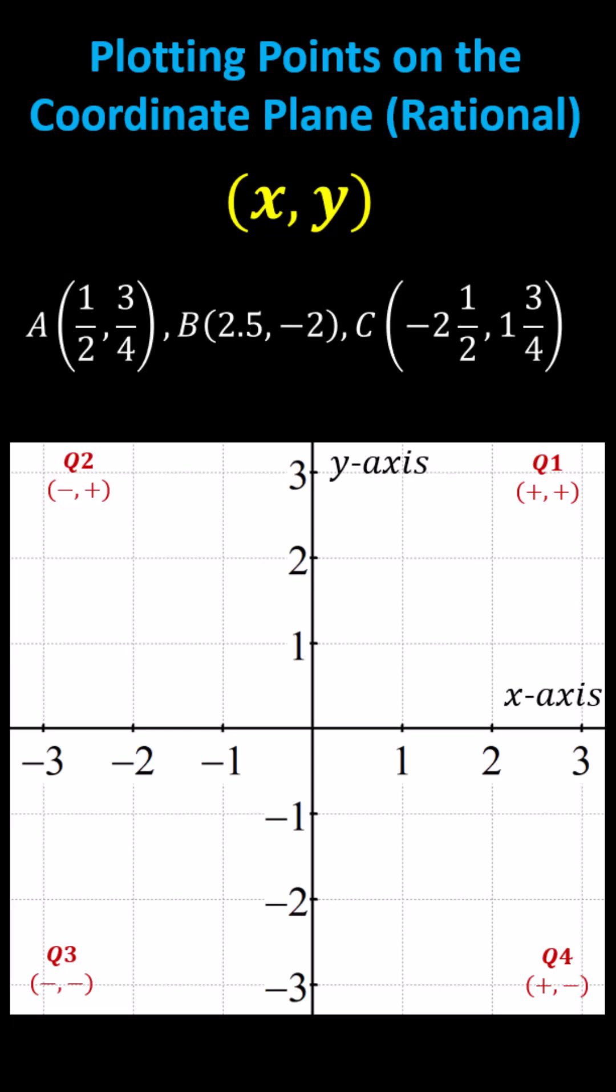We want to plot the given points on the coordinate plane. Point A has coordinates one-half comma three-fourths, which indicates x equals one-half and y equals three-fourths. Let's first locate these values on the x and y-axes.